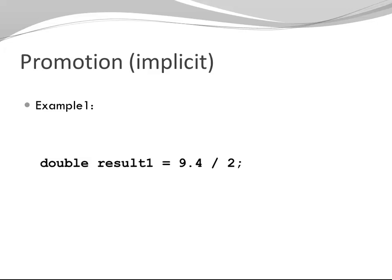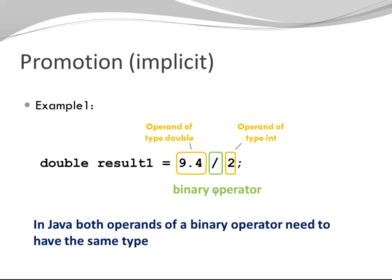Let's have a look at Promotion first. Double result1 gets assigned 9.4 divided by 2. My forward slash is a binary operator indicating division. It has two operands. 9.4 is an operand of type double. 2 is an operand of type int. In Java, both operands of a binary operator need to have the same type. In our case, one operand is double. The other operand is of type int. So type conversion is needed. The Java programming language is going to convert that implicitly. It's going to use Promotion. The integer 2 is going to be promoted to a double 2.0.